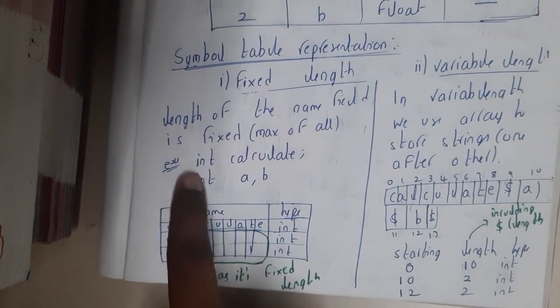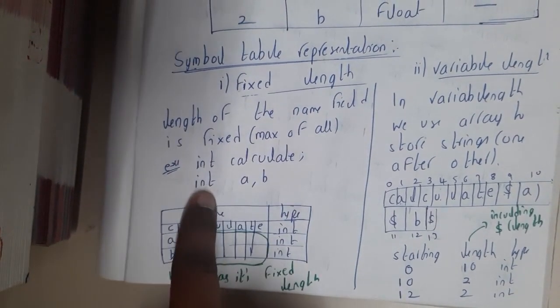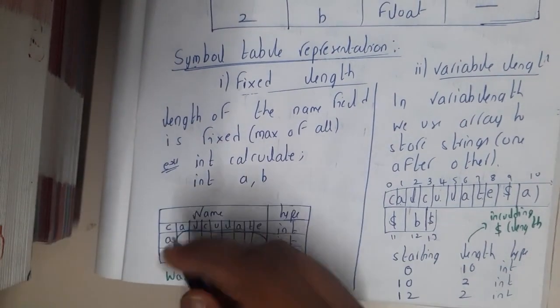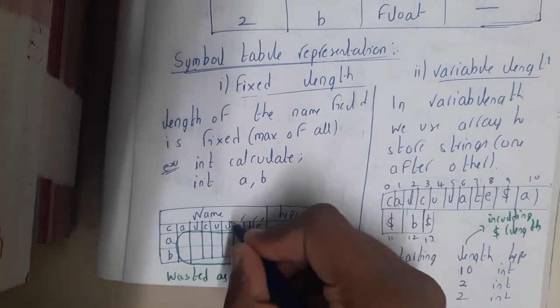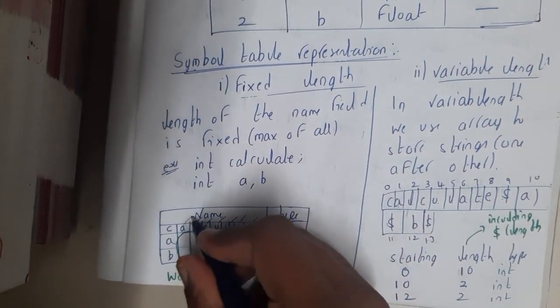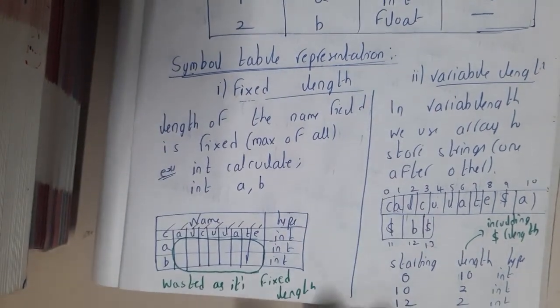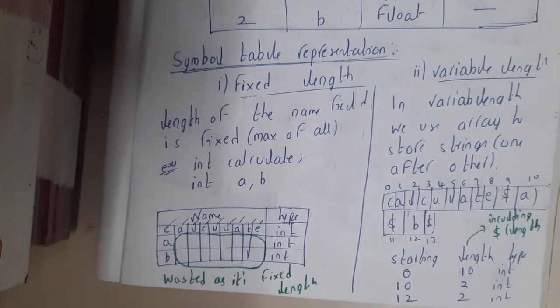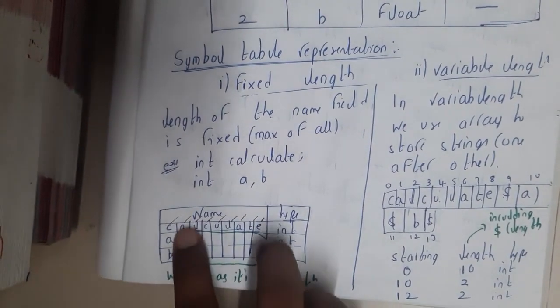So 9 character spaces, whereas a and b occupy only 1 out of 9, indirectly wasting almost 16 bits. This is the drawback in fixed length.